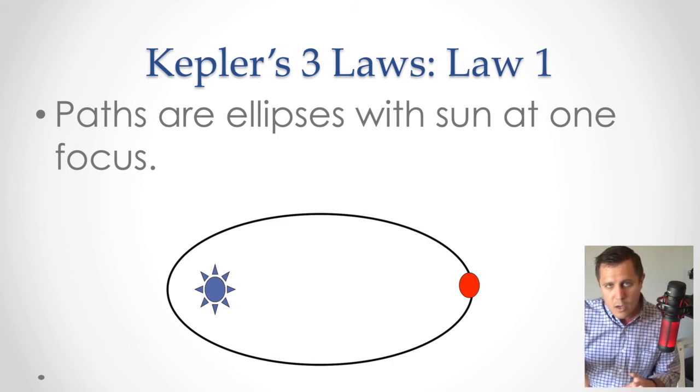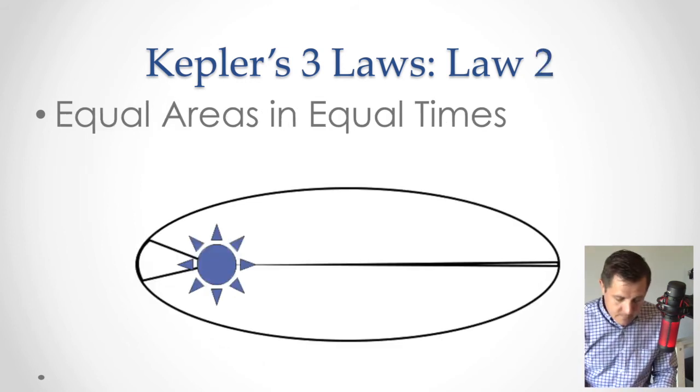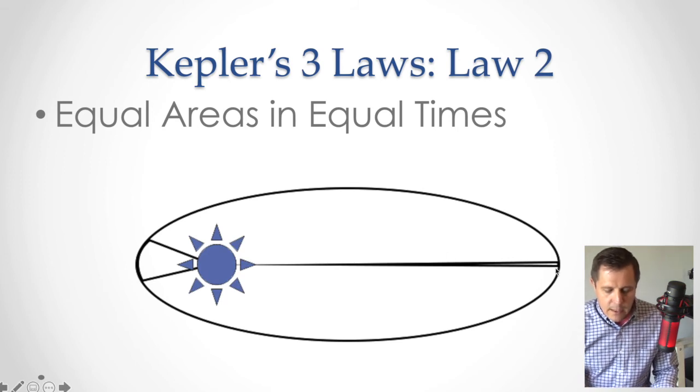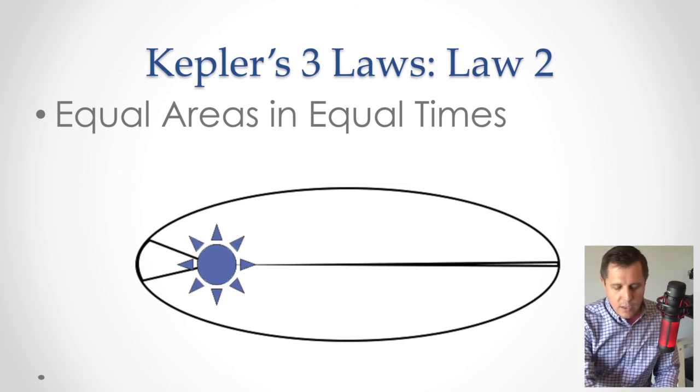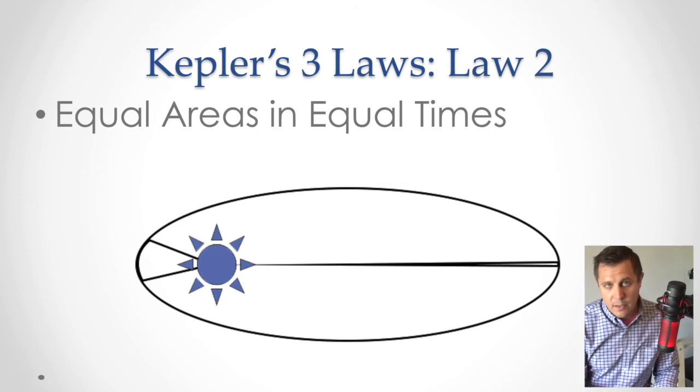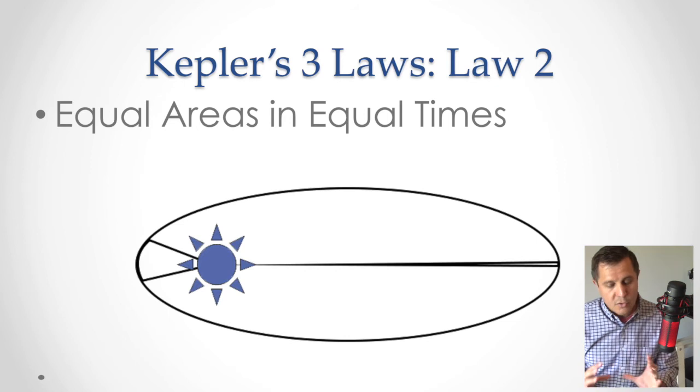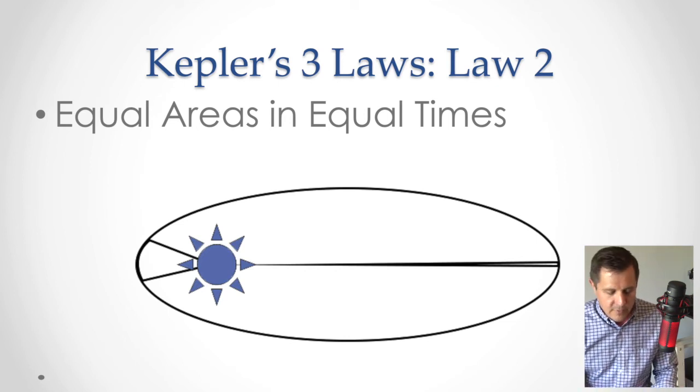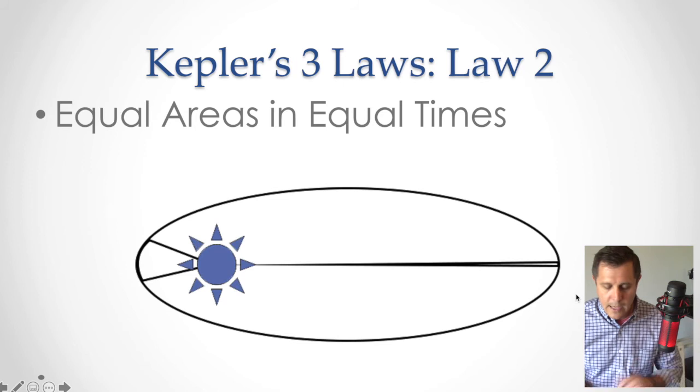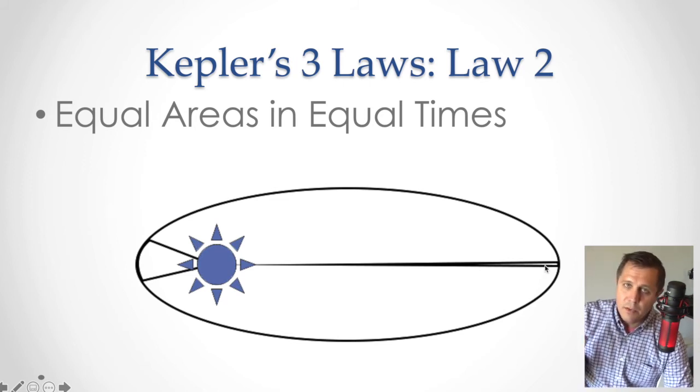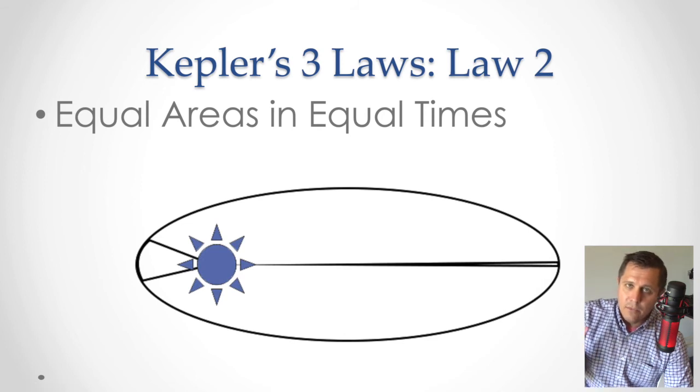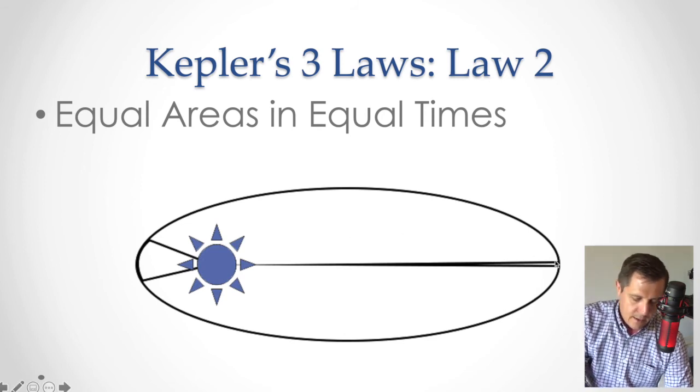Next thing he noticed was this. If you looked at how far that planet traveled—this is a really gross exaggeration of the ellipses, it's going to be closer to a circle, but it's a lot easier for demonstration to have these long elongated, really high eccentricity ellipses. If you looked at how far a planet traveled in a month from some point, let's say whatever this is, August, right here.